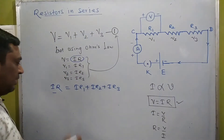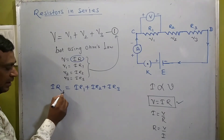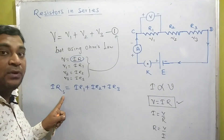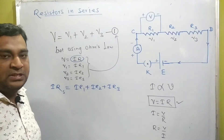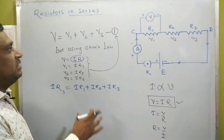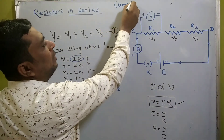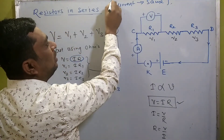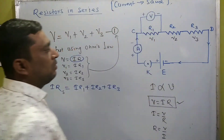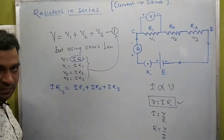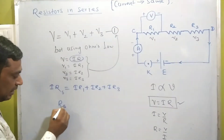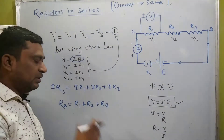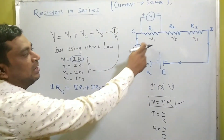Here R stands for the effective resistance, written as Rs, where S stands for series. In a series combination, the current is the same across each resistor, so we can cancel the common factor I from both sides. What remains is: Rs equals R1 plus R2 plus R3. This is the expression for three resistors connected in series.